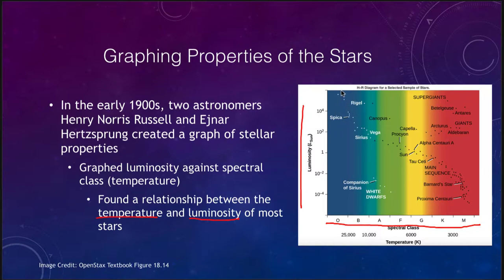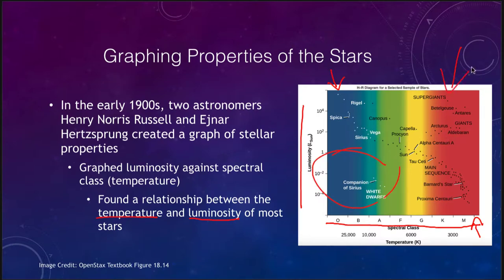What they found was a sequence starting in the upper left going down to the lower right, and that main sequence shows a very distinct relationship between the temperature and the luminosity. We don't find a lot of stars down in the lower left hand side, and we don't find as many stars up in the upper right hand side. There are some, and there are other reasons for that which we'll look at, but in general we did find this pattern.